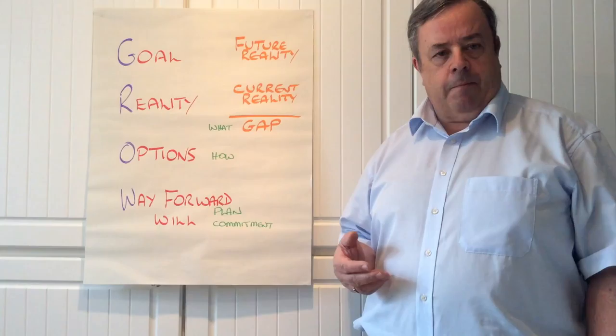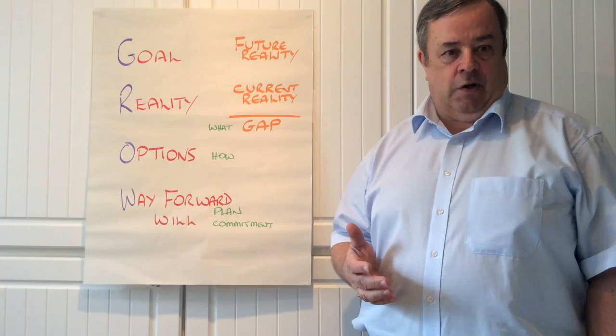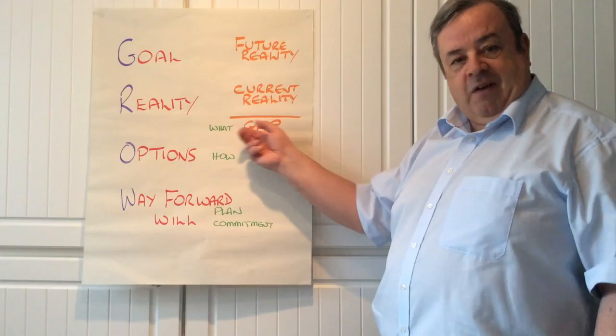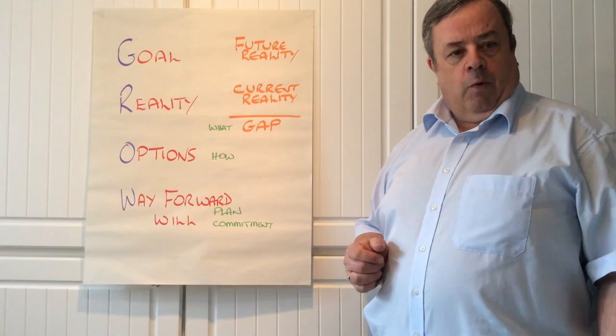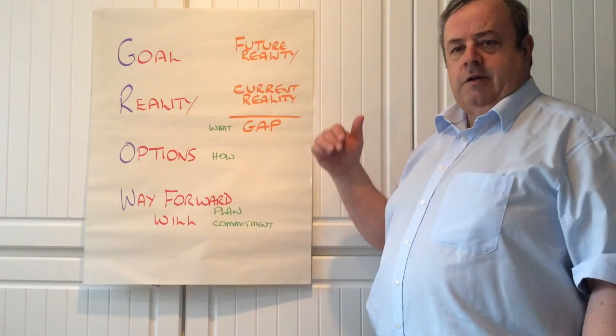Now this model is not a four-step model. It is four different dimensions that we need to deal with in any coaching conversation. Sometimes people will start with the current reality — the problems that I've got, the difficulties that I've got, this doesn't happen, that doesn't happen — and we need to elevate them to: so what is it that you want to have happen? What would the new way be that we're wanting to have in the future?